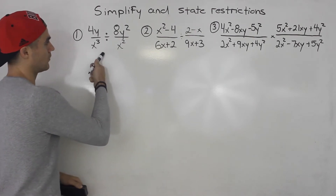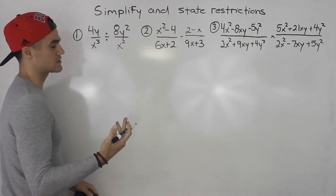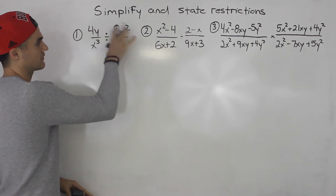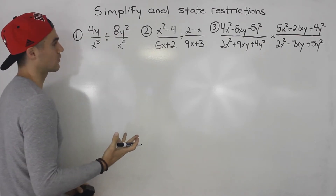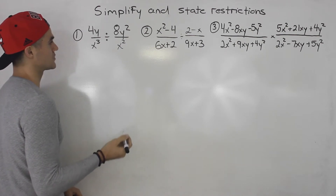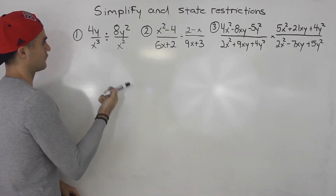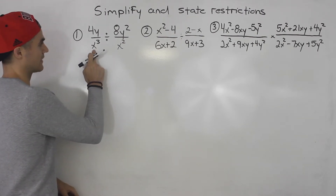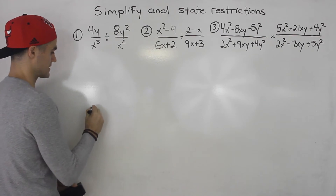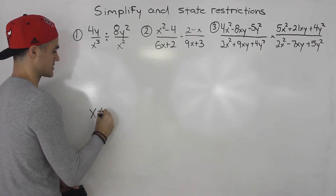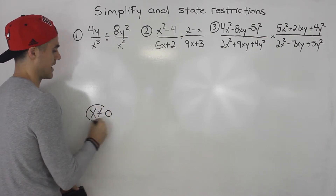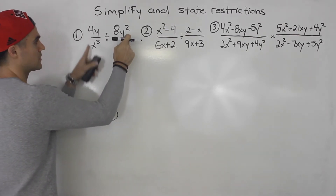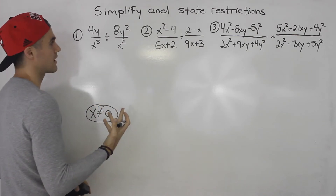Starting off with number one, the first step is to check whether everything is factored. Notice how everything is factored here and can't factor further. Then we get the restrictions. The first thing we look at is the denominators. Notice here x cubed and x squared cannot equal zero — they both simplify to x cannot equal zero, because if x is zero you're dividing by zero, which makes everything undefined.